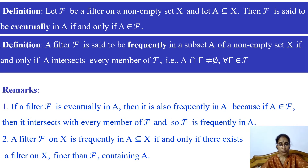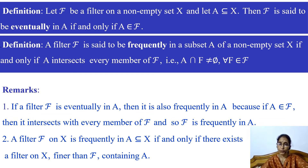The second definition: a filter F is said to be frequently in a subset A of a non-empty set X if and only if A intersects every member of F. That is, A intersection F is non-empty for every F in filter F.